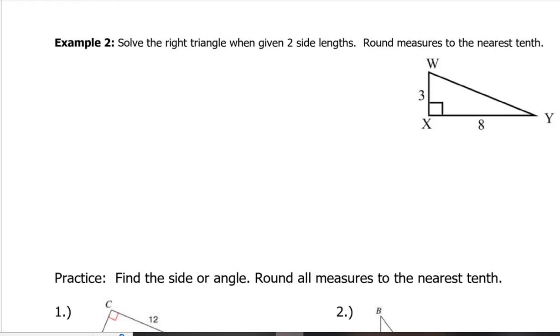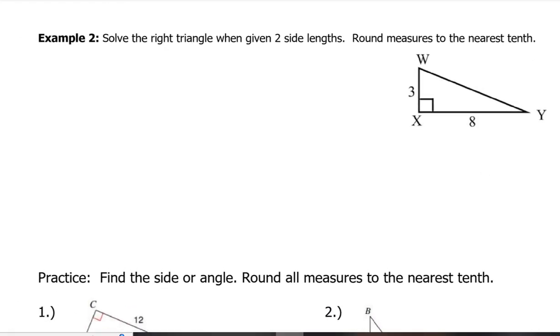You'll be giving some of that info but you got to find everything. When I take a look at this second example here, we got to solve the right triangle. We're given two side lengths. We got this side length over here of 3, the WX side, and the XY side is 8. We got to round everything to the nearest tenth.